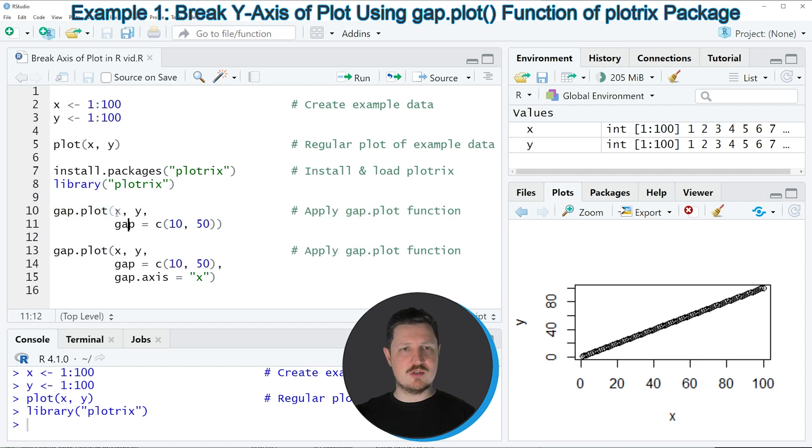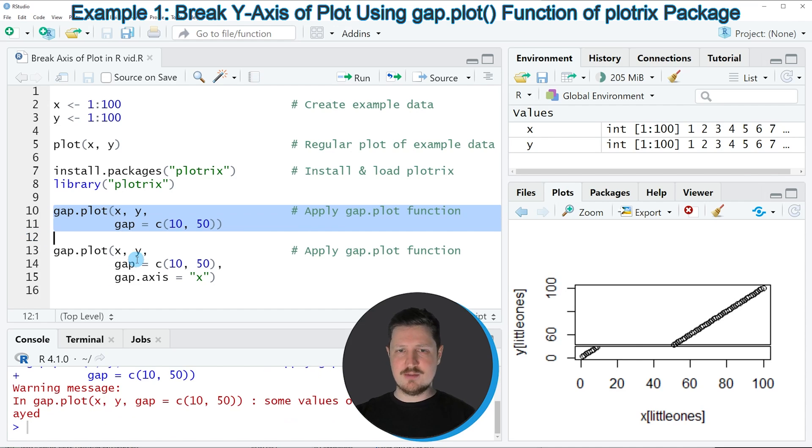And within this function we need to specify the two vector objects that we want to draw, so in this case X and Y. And then we need to specify between which axis locations we want to insert a break. So in this case I'm using the values 10 and 50. So if you run lines 10 and 11 of the code, you can see at the bottom right that our plot is updated. And as you can see, this time we have inserted a break on the Y-axis because we have removed all the data points on the Y-axis between the limits 10 and 50.